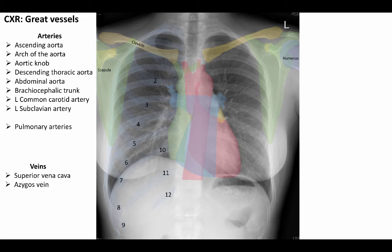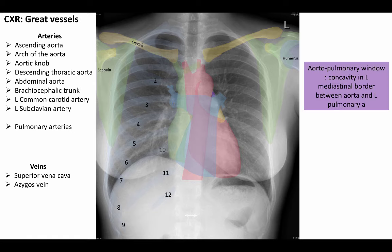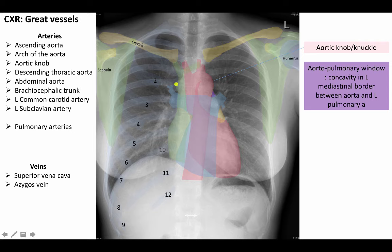The great vessels can be seen emanating from the heart. Here we see the brachiocephalic trunk, and here the left subclavian artery. Here again we see our ascending aorta, arch of the aorta, and descending thoracic aorta. Here we can see the left and right pulmonary arteries. A useful way to identify these is to find the aortopulmonary window — a concavity in the left mediastinal border between the aorta and left pulmonary artery. The aortic knob or knuckle is the left lateral border of the aorta as it arches posteriorly and inferiorly. Here is our superior vena cava, and the projection on its lateral wall is the point at which the azygous vein joins this vessel.